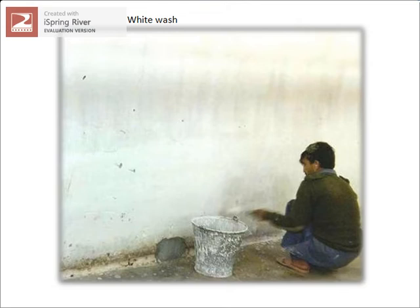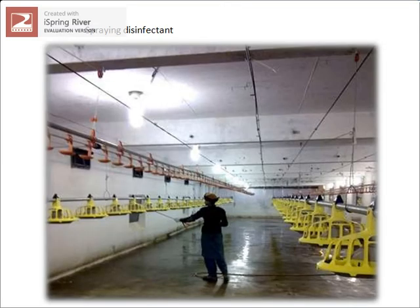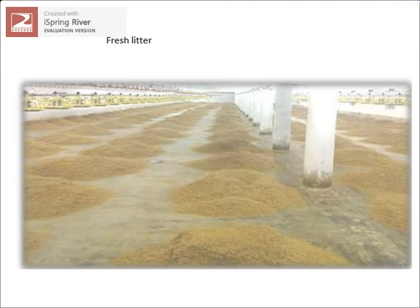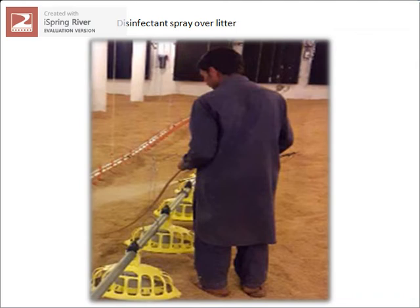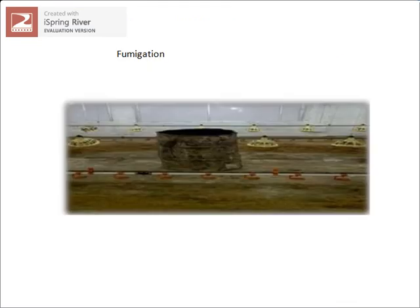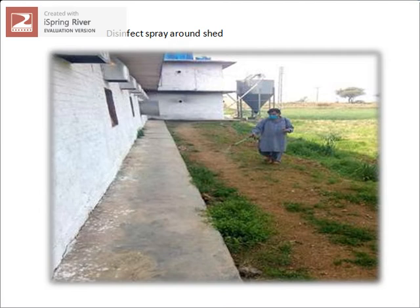Whitewashing is done inside and outside — it is an important step to prepare the farm. Here someone is going to spray the disinfectant. Here is the fresh litter — rice husk — being sprayed with disinfectant. You can see the fumigation process and the cleaning and disinfection of the surrounding area.